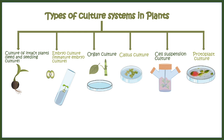There are at least six tissue culture types: whole embryo culture, seedling culture, organ culture, callus culture, suspension culture, and protoplast culture. Each of these culture methodologies has its own advantages and disadvantages and can be utilized for particular purposes.